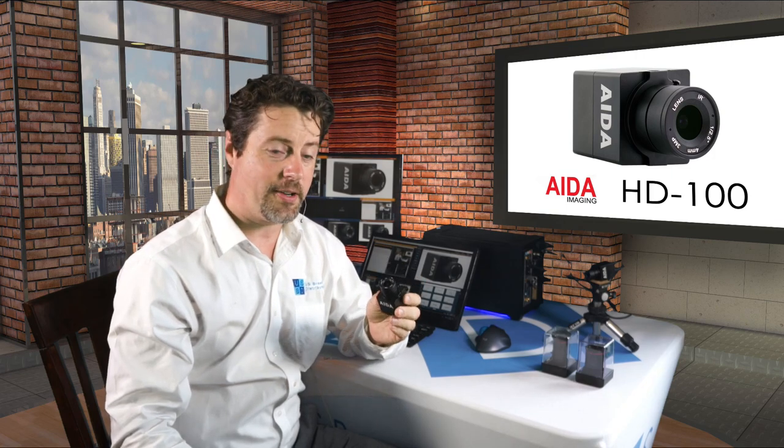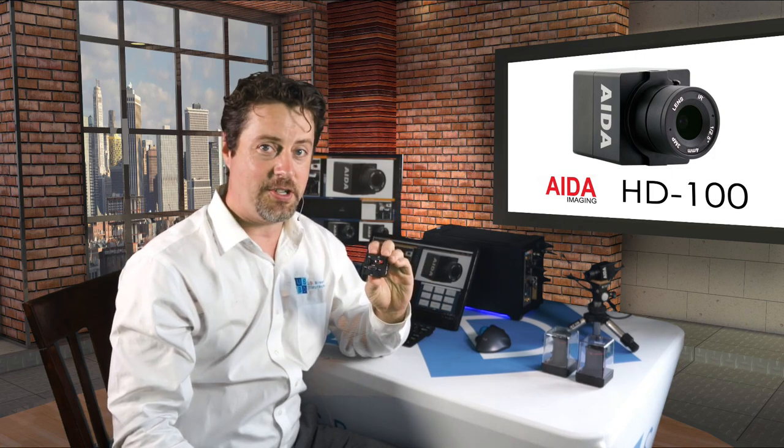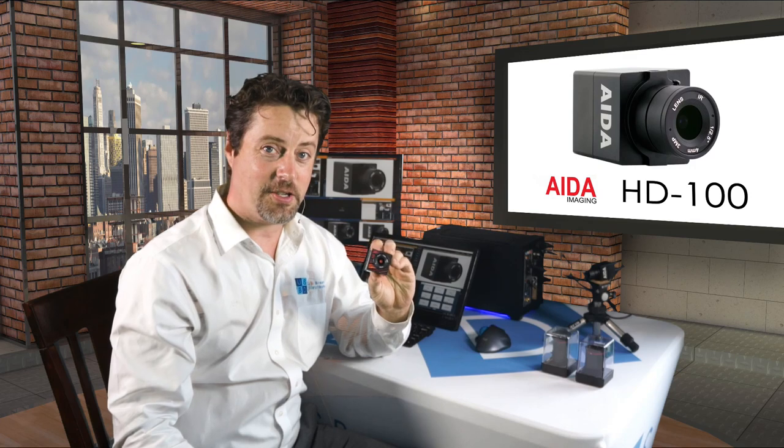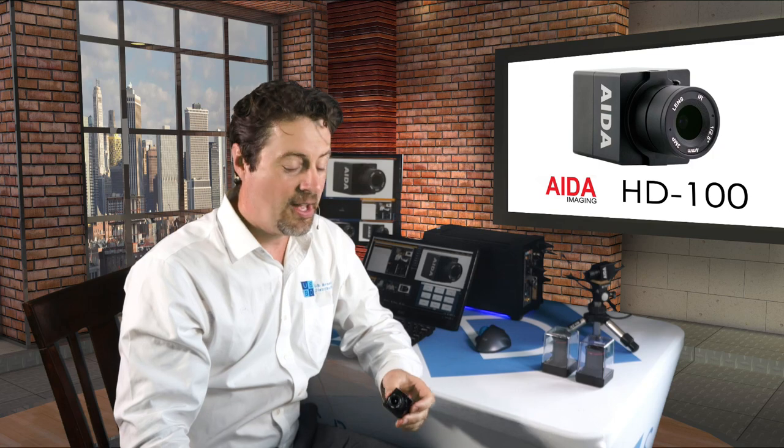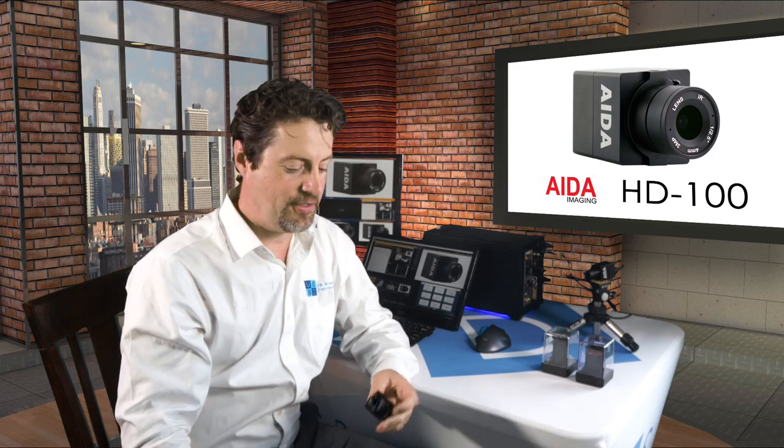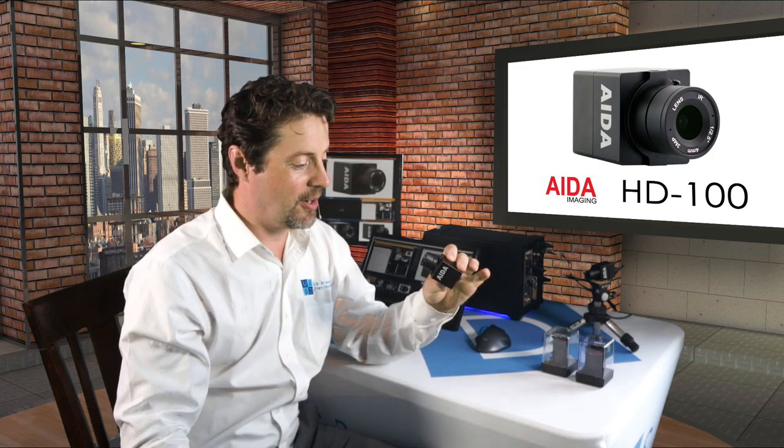It's a small form factor POV camera with HDMI out on it. It has interchangeable CS mount lenses, and we're going to talk about a few of the other lenses that are available through AIDA as well as the wide range of CS mount lenses available on the market.